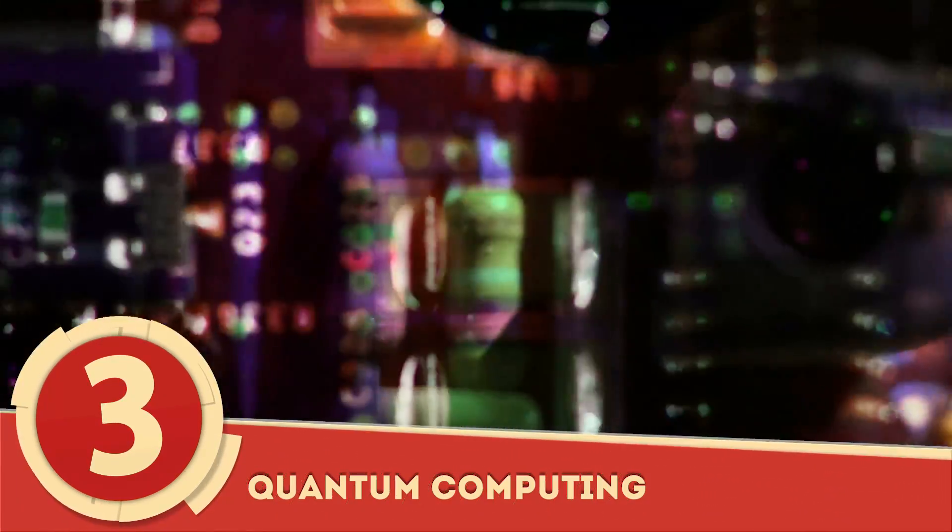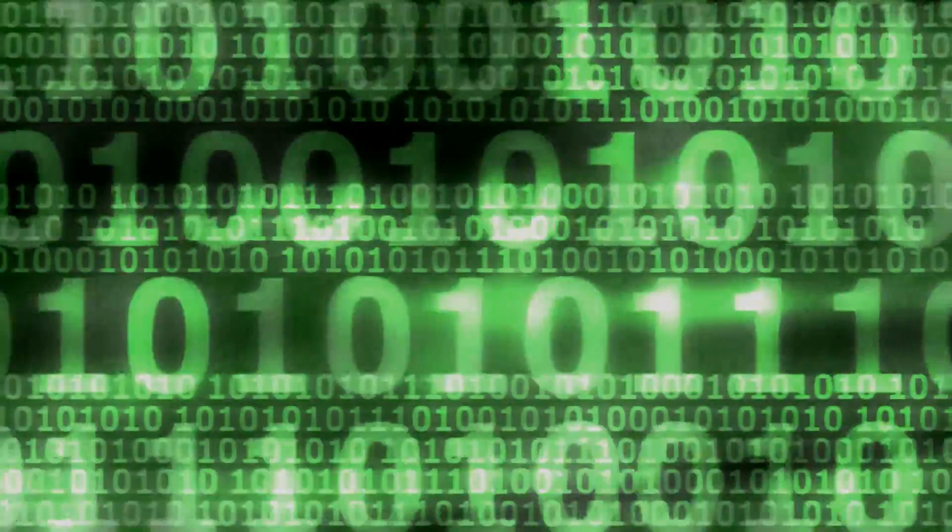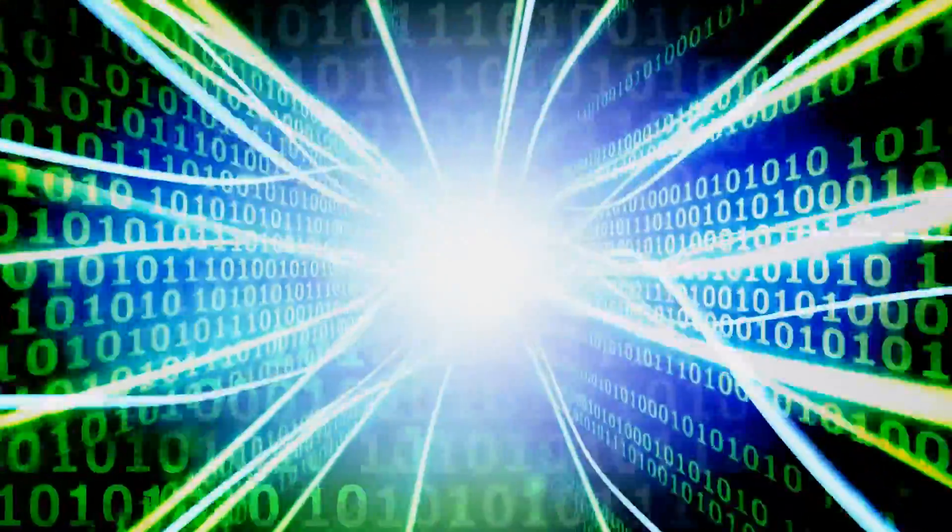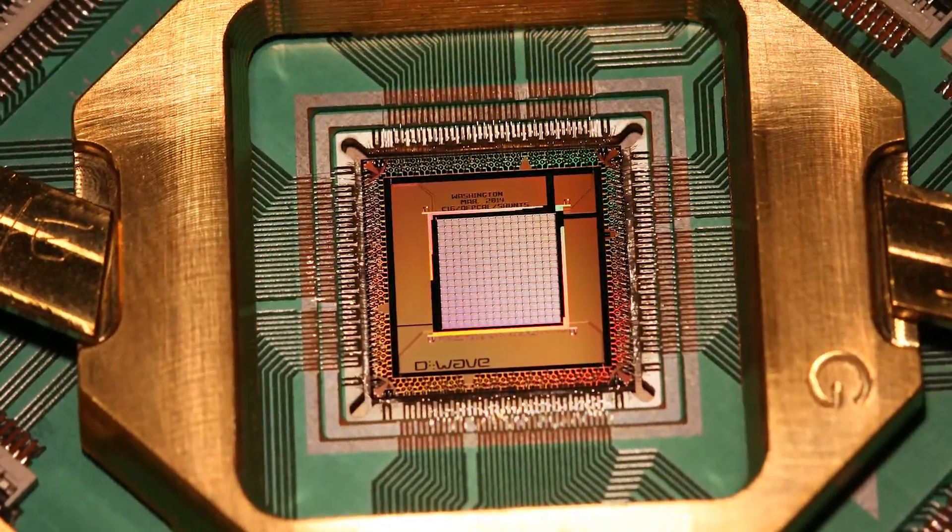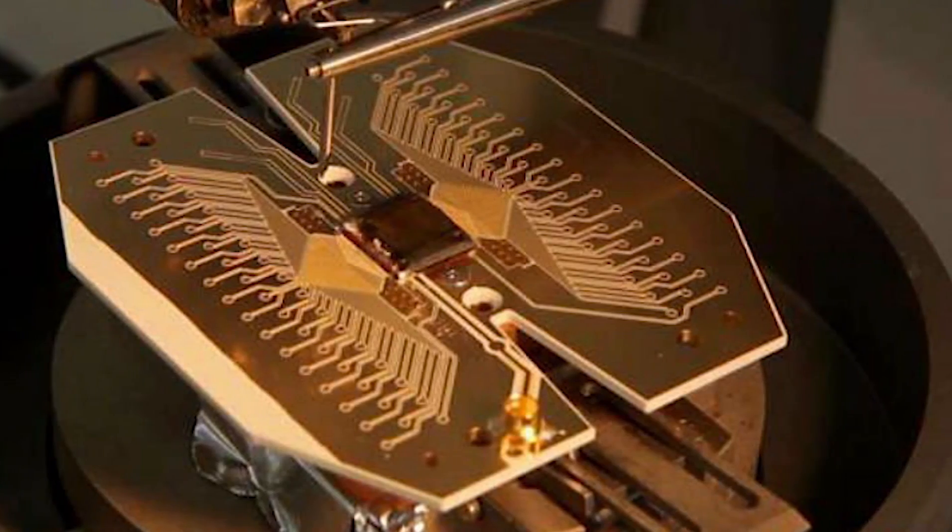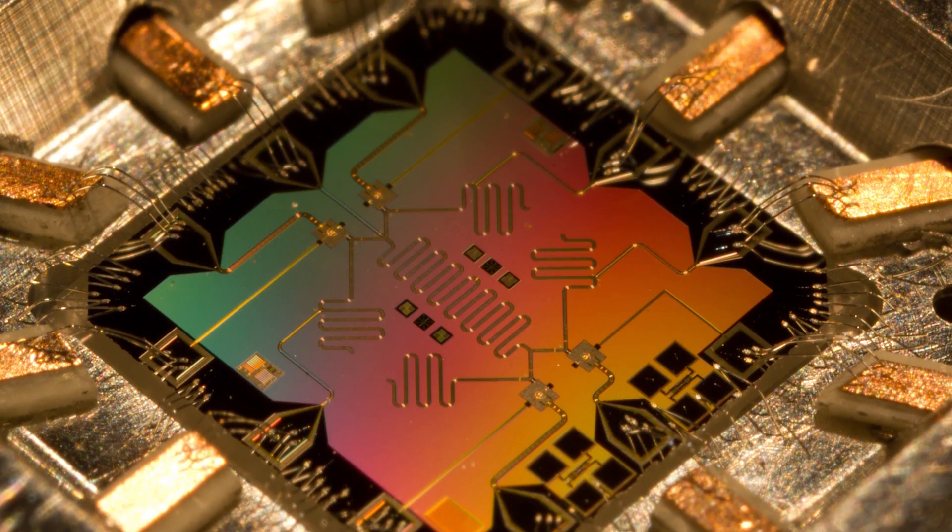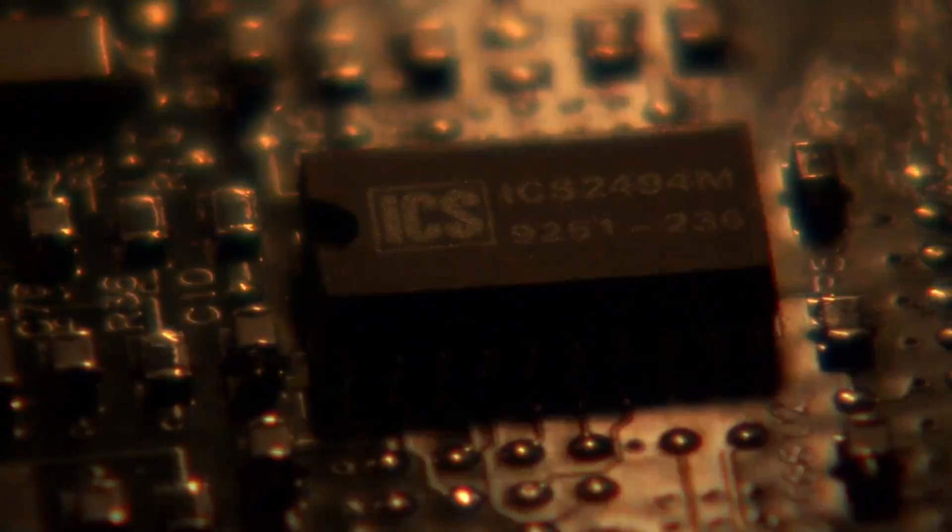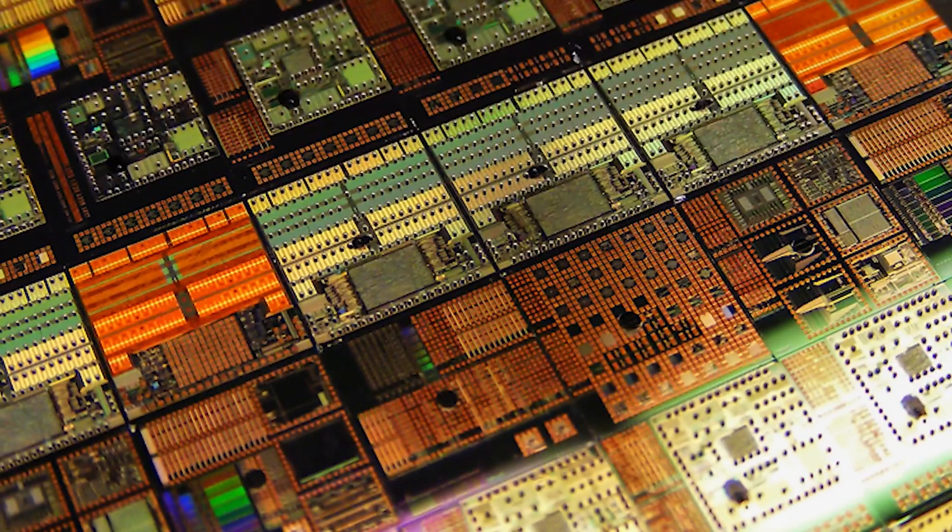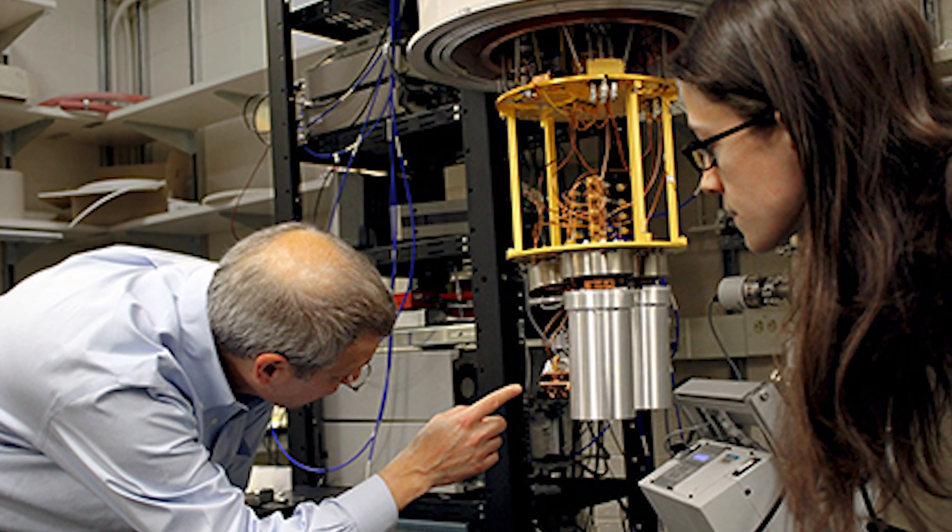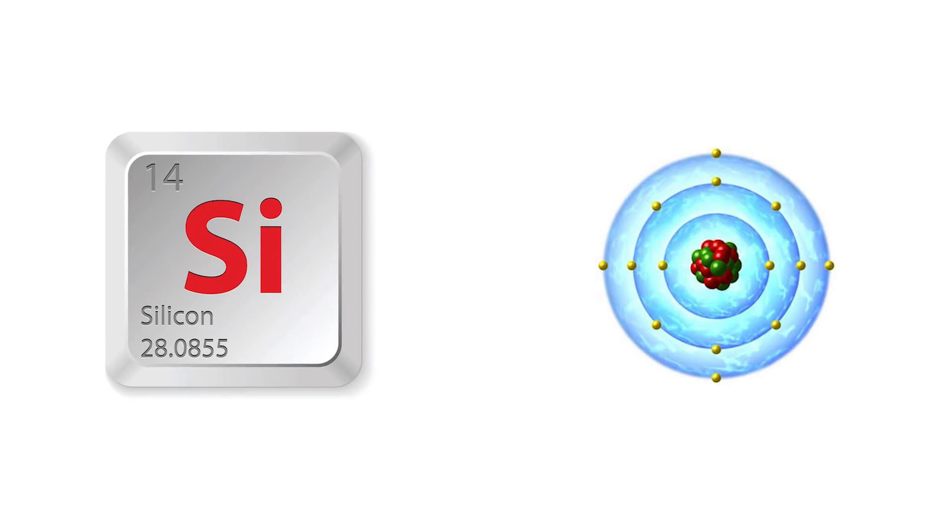3. Quantum Computing. Computing as we know it today is done using binary digits, defined as either zero or one, and relies on a certain amount of energy to complete its processes. As we grow more and more reliant on these processes to run everyday life, computing will require more energy than we can produce, hence the hopeful shift to quantum computing. Differing from the current method, quantum computing will utilize subatomic particles known as qubits, which can exist in multiple states at all times, thus performing processes faster with less energy. Standing in the way of quantum computing is the current lifespan of qubits, but a breakthrough in 2016 extended the life of quantum bits by 10 times using silicon atoms.